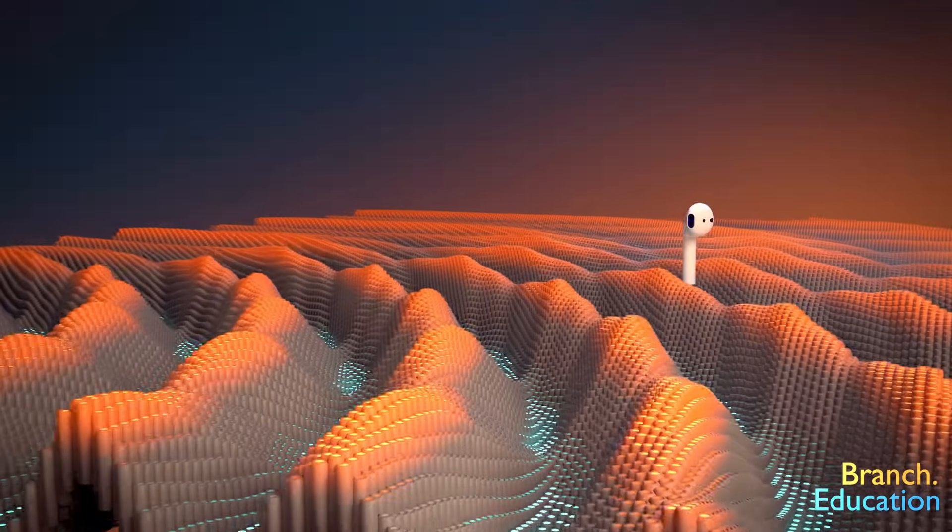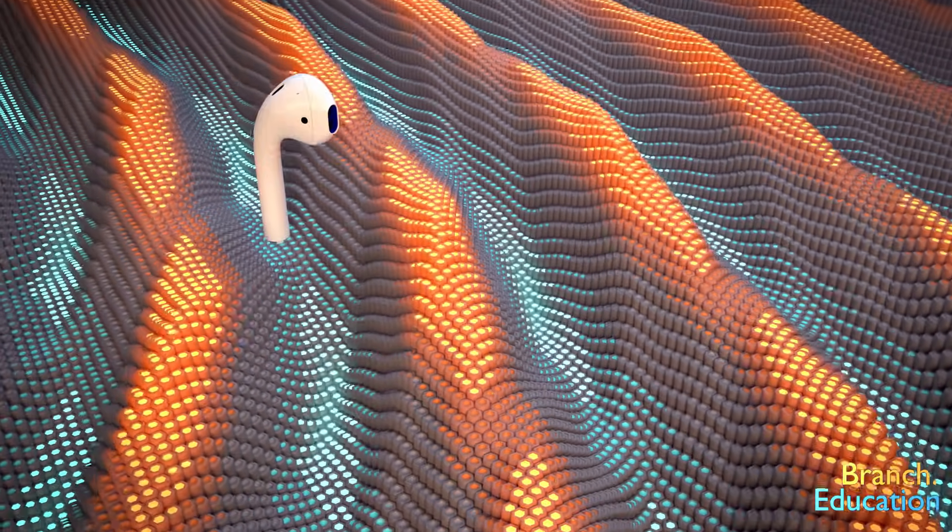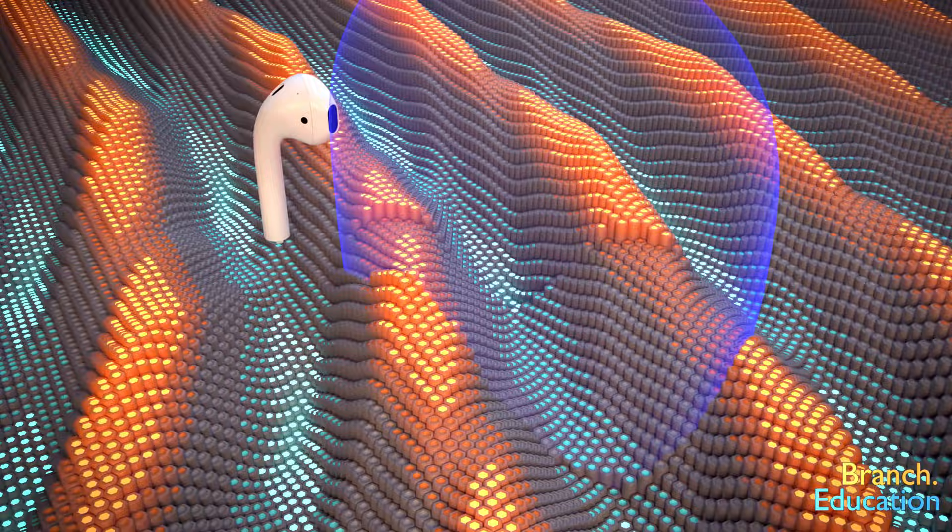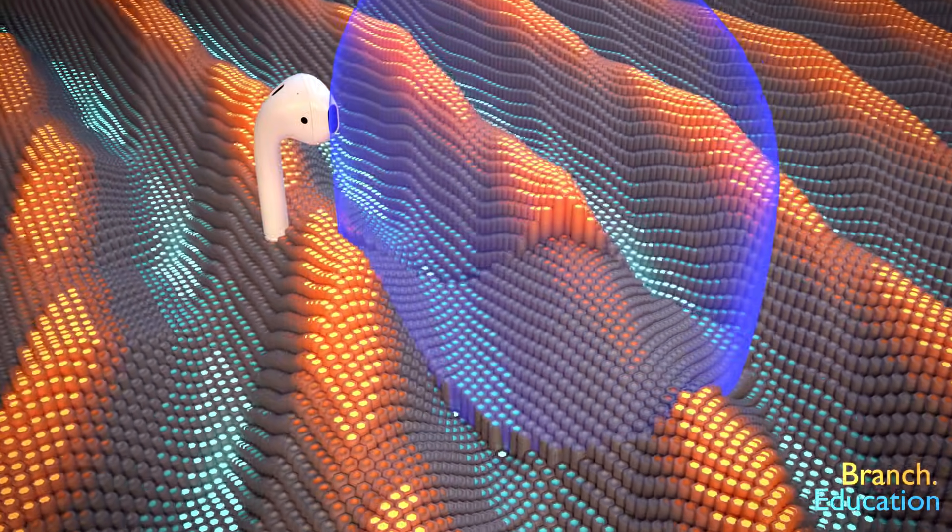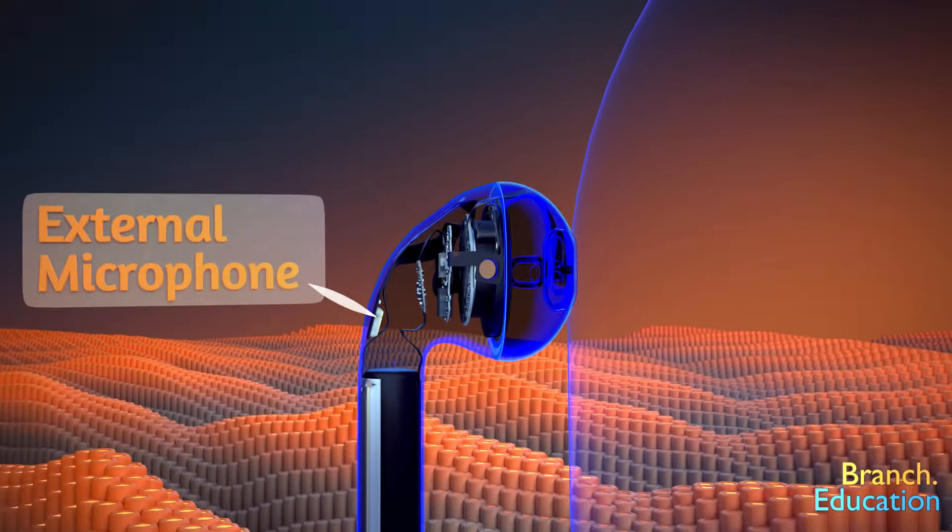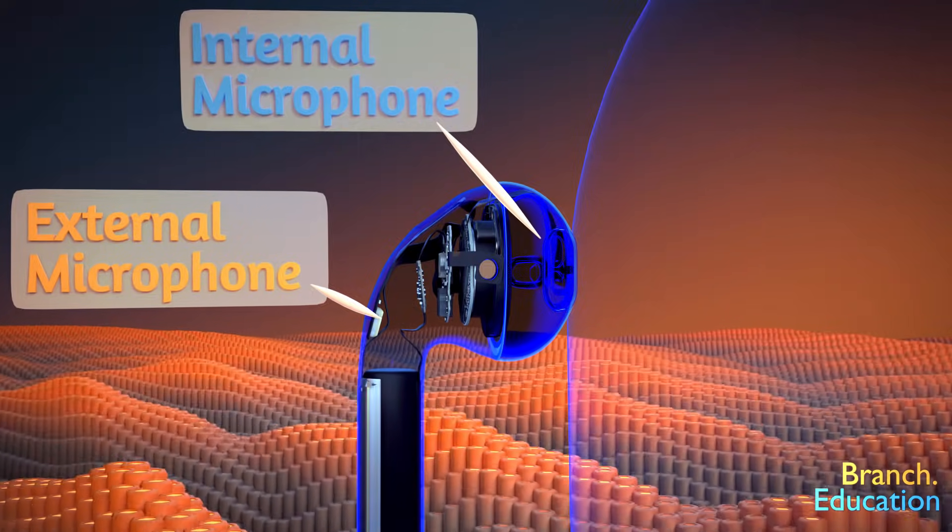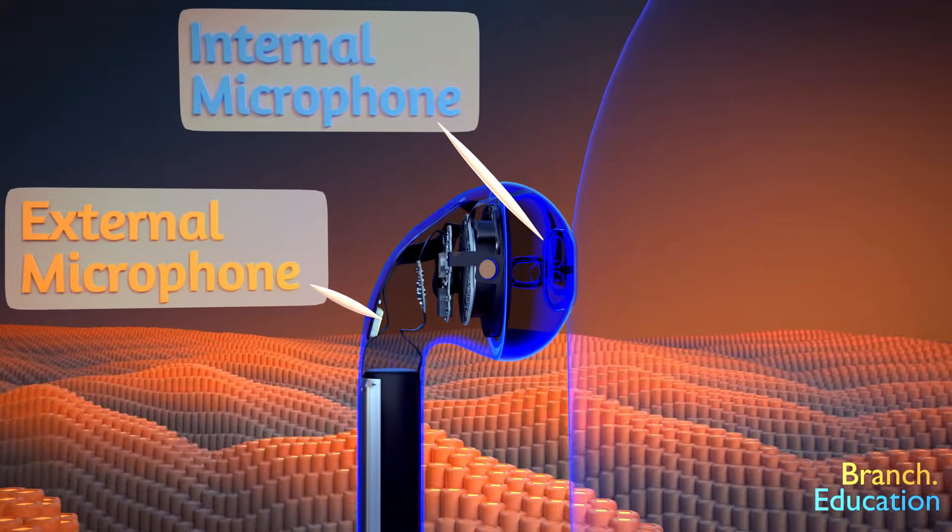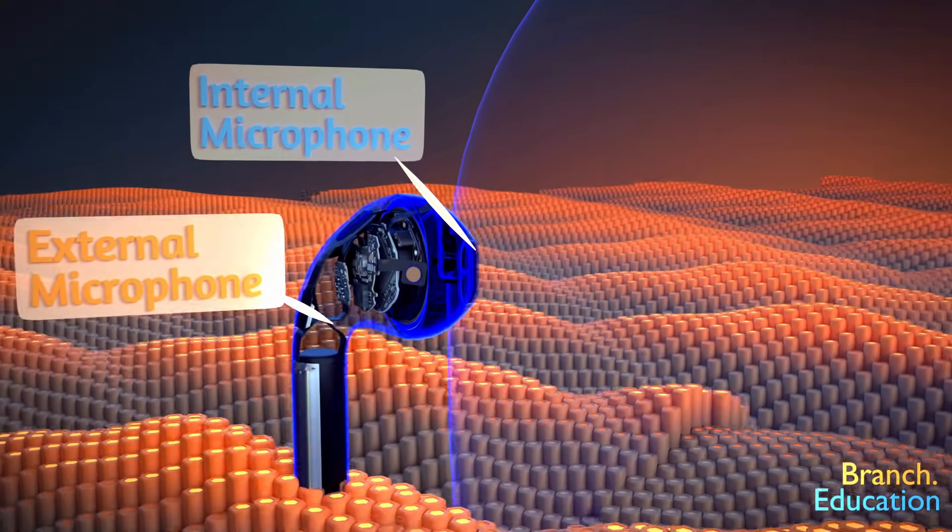There are a few engineering challenges with this solution. First, the headphones or earbuds themselves provide some passive noise insulation and therefore we need two microphones. One microphone is used on the outside to measure the noise itself and the second microphone is used on the inside of the headphones to measure the percentage of noise that's getting through the sound insulating properties of the headphones and into your ear.